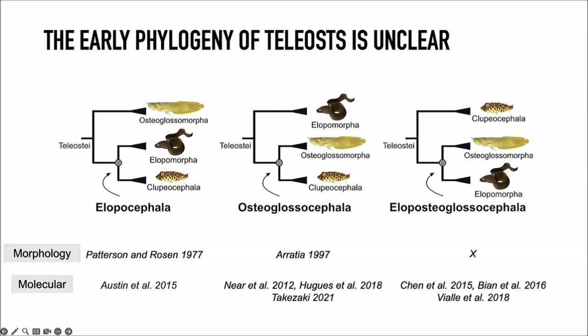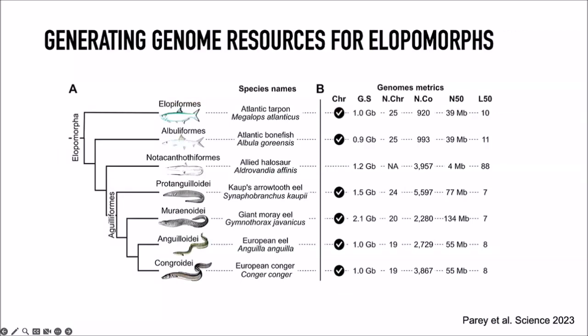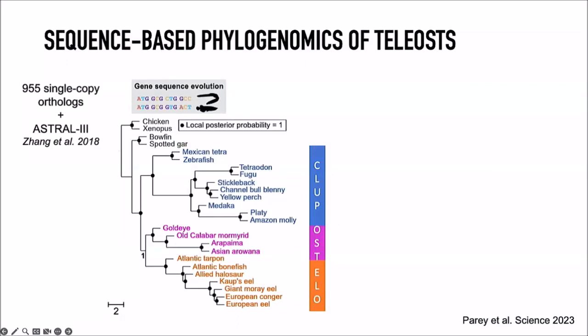To try to resolve this question, we started by generating resources, especially for eels — the group for which we had no whole-genome sequences. We sequenced the genomes of seven representative eels and elopomorphs. These are fairly large genomes, typically between one and two gigabases. We obtained really good quality chromosomal-level assemblies for all seven species.